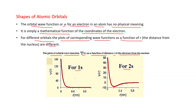As the radius increases, psi(r) decreases for 1s. For 2s, psi(r) first decreases and then increases.